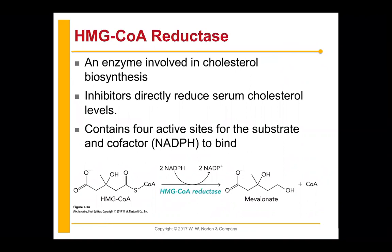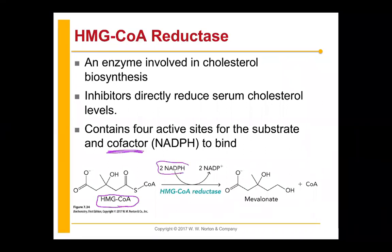We need a cofactor for this reaction — NADPH. This is the first time we're really talking about a cofactor. It's a tetrameric enzyme with four active sites. The active site is going to bind HMG-CoA and bind the cofactor NADPH — we actually need two NADPHs to make the reaction go. This NADPH is going to catalyze a four-electron reduction of HMG-CoA, making CoA and mevalonate.